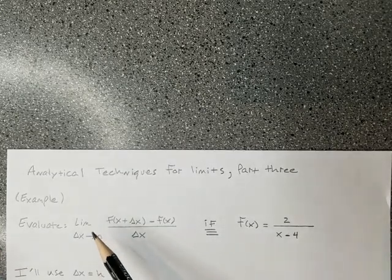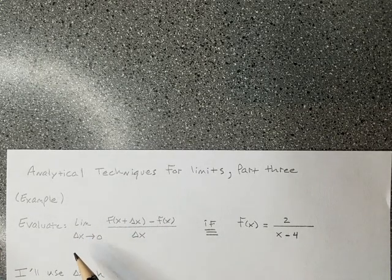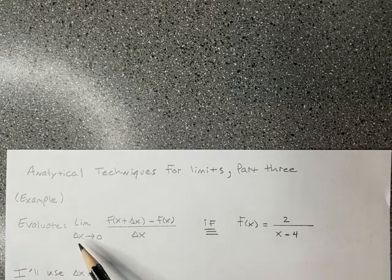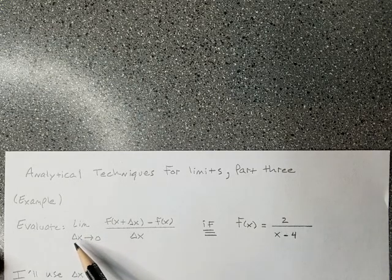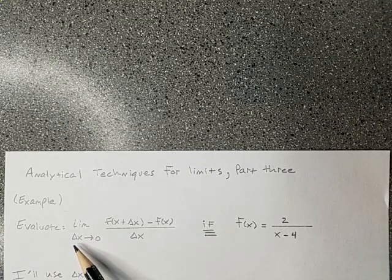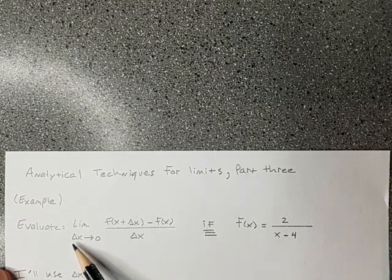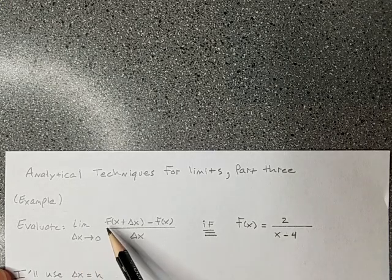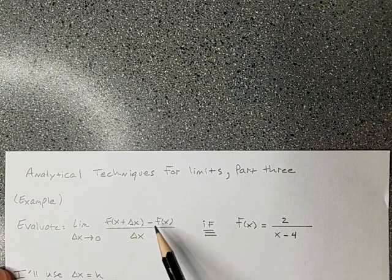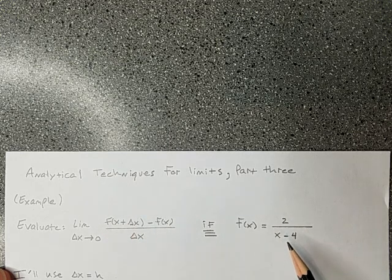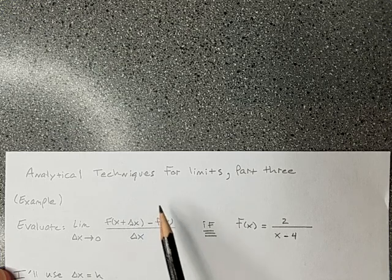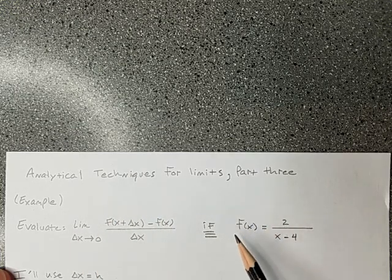We want to evaluate the limit as delta x goes to zero. So this triangle x, that's delta x, and that's an important type of notation for anybody who's taking advanced math or science. For now I'm not really going to worry about what it means. We'll learn about it later in the class, but I would read it delta x goes to zero of f of x plus delta x minus f of x over delta x. What's f? That's a function. That's a formula of some kind. So f of x is 2 over x minus 4. So there's our problem. Evaluate this limit for that function.